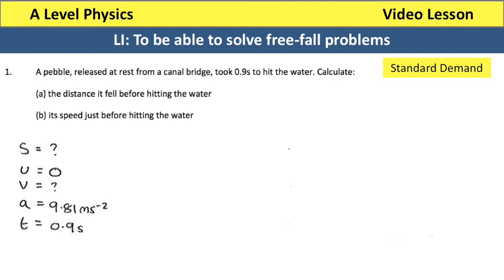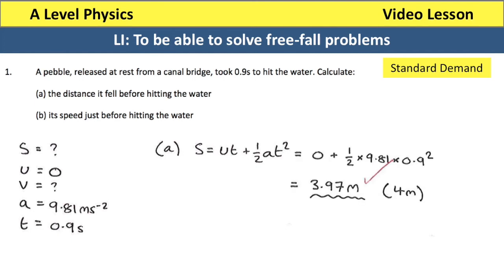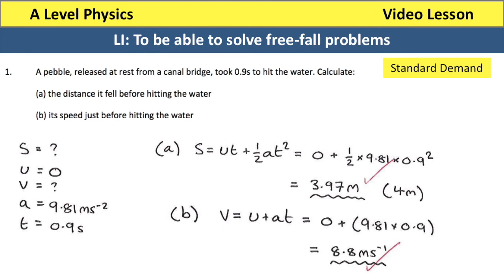To find S we need an equation with S, U, A and T. From the formula sheet the equation that jumps out is S equals UT plus a half AT squared. U times T is zero because U is zero, so we're simply doing a half multiplied by 9.81 multiplied by 0.9 squared, giving an answer of around 4 metres. For the speed just before it hits the water, we use V equals U plus AT. U is zero, so all we do is 9.81 times 0.9 to give a final answer of 8.8 metres per second.